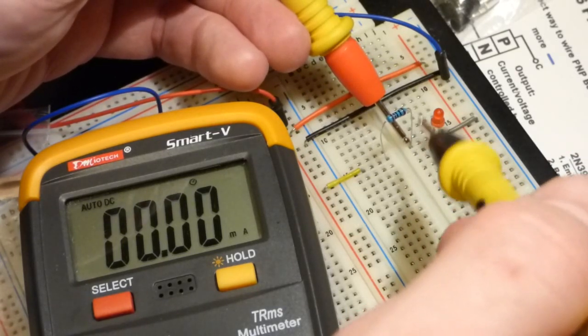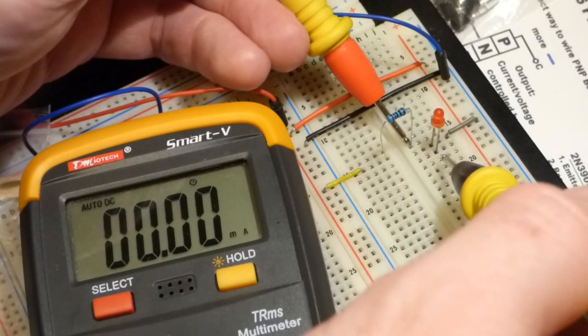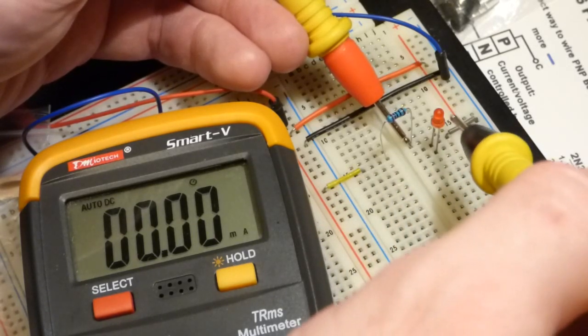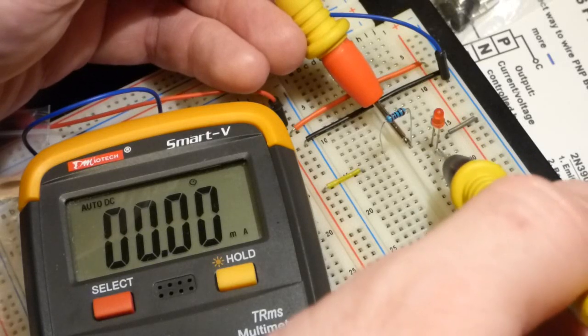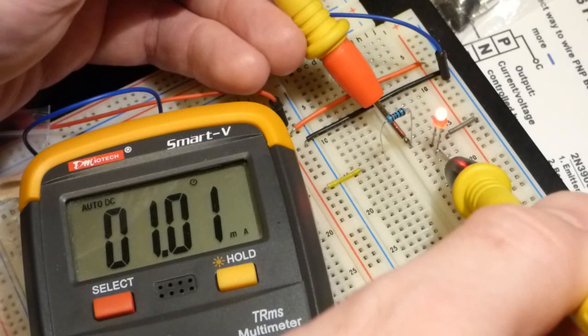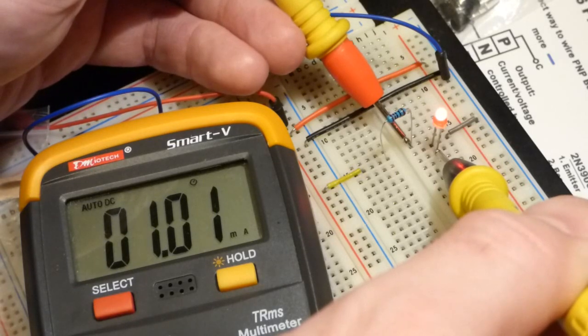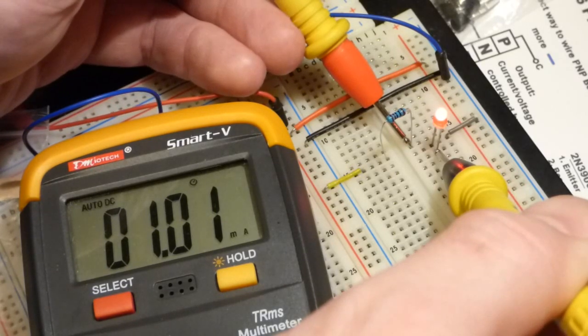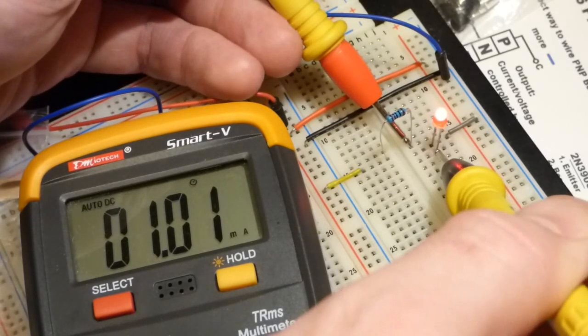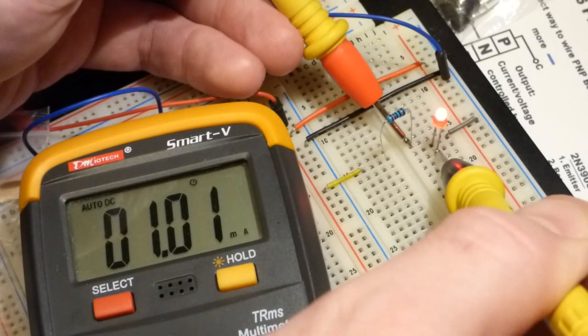So be aware of that if that applies to your meter. We're going to complete the circuit through the meter: the red probe to the resistor because that goes towards the positive rail, and then the black probe here because that leads to the negative rail. There you can see we have 1.01 milliamps of current going through both the LED and the resistor.